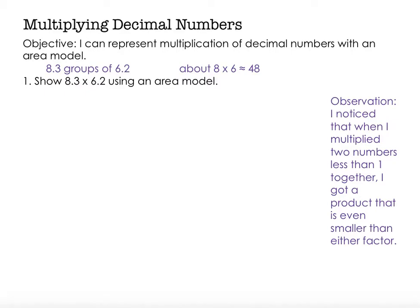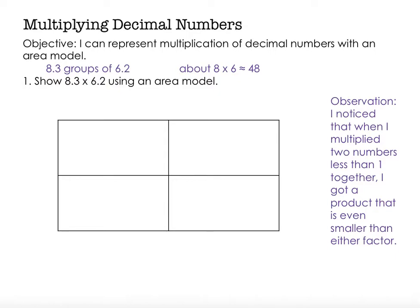Okay, I'm going to create an area model. Each of my numbers has two parts, a ones place and a tenths place. So I'm going to have a 2 by 2 rectangle for my area model, and I can write the numbers in any order that I want to as long as I account for the decimal place. So I'm going to choose on the left to write 8 and 3 tenths, and then on the top, I'm going to write 6 and 2 tenths.